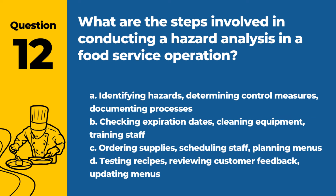Question 12. What are the steps involved in conducting a hazard analysis in a food service operation? a. Identifying hazards, determining control measures, documenting processes. b. Checking expiration dates, cleaning equipment, training staff. c. Ordering supplies, scheduling staff, planning menus. d. Testing recipes, reviewing customer feedback, updating menus. Answer: a. Identifying hazards, determining control measures, documenting processes. These are the key steps in conducting a hazard analysis in a food service operation.